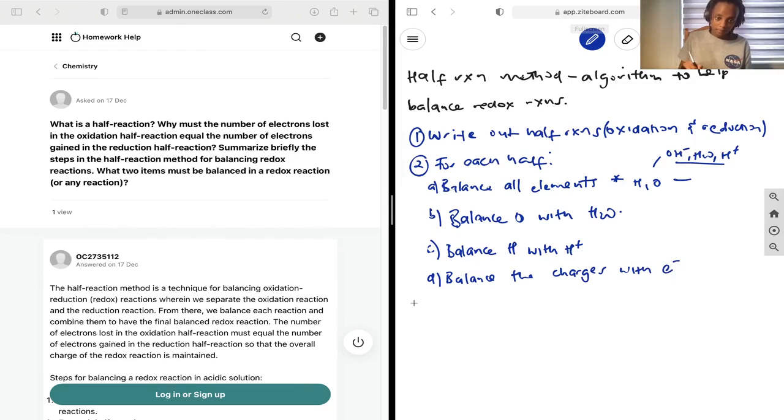Step three is multiplying equations, only if necessary, by a factor in order to ensure that the electrons cancel out in both half reactions, because we don't want to see them in the overall reaction.